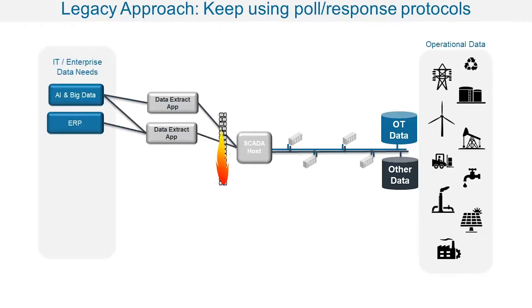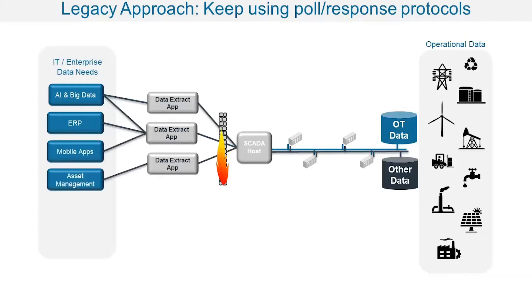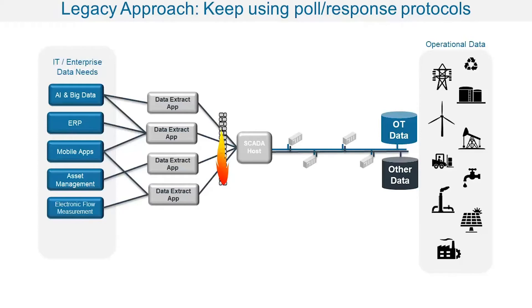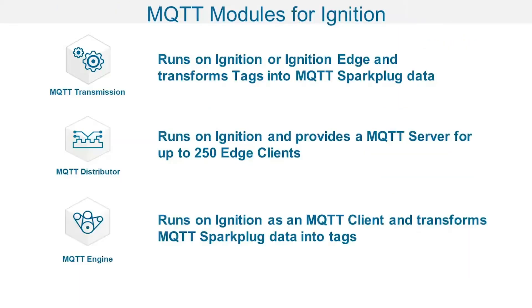Then another requirement comes along where maybe we want more data from other devices in the field — data that we've left stranded. As this builds out, you can see that we're trying to make a SCADA host system, which was never intended to be message-oriented middleware, look like message-oriented middleware. Everything finally gets so complex and convoluted that innovation stops because the system becomes so customized and brittle.